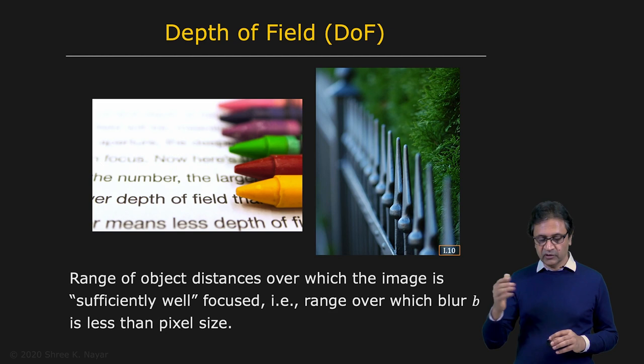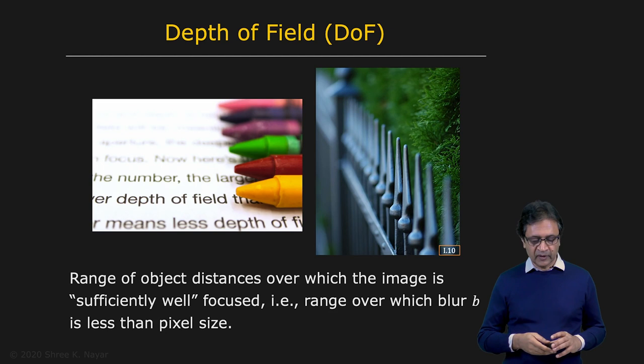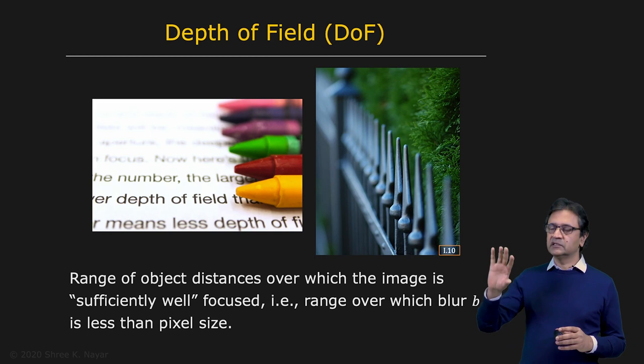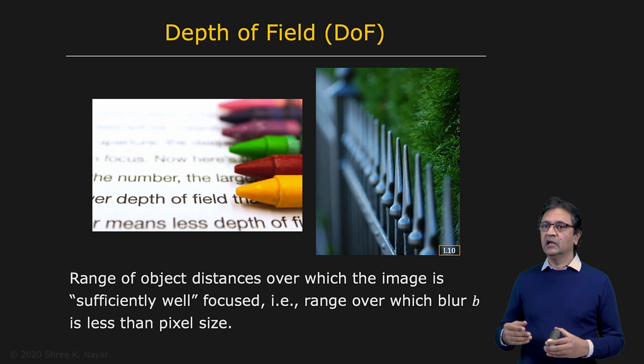This is in the continuous domain when talking about your optical image. But we also know that images have finite resolution — they're made of pixels of finite size. So it turns out that the best focus region in the scene, or the range of depths that are best focused, are those points for which the blur circle lies within a single pixel.